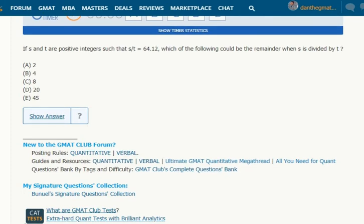S and T are positive integers. S over T equals 64.12. Well, the rule here is that the decimal remainder times the divisor equals the whole number remainder.